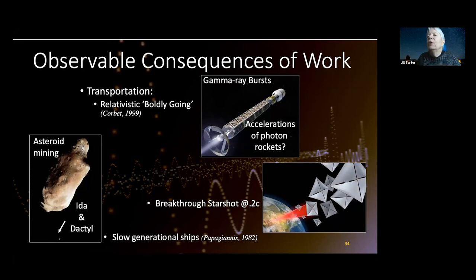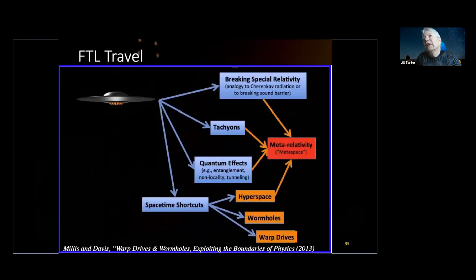We have been thinking about laser acceleration or microwave acceleration of targets to get near the speed of light for interstellar exploration. Something like Breakthrough Starshot lasers are visible across a vast array of space, and we should be looking for that kind of consequence of doing work. And faster-than-light travel — I put this out because you can't ignore it, but I don't know what the observational consequences might be.